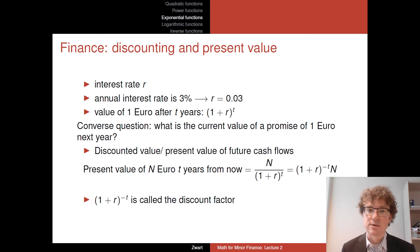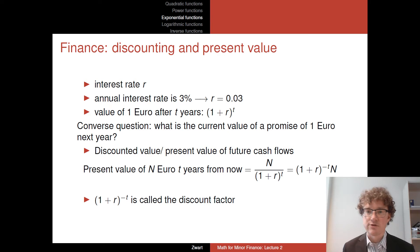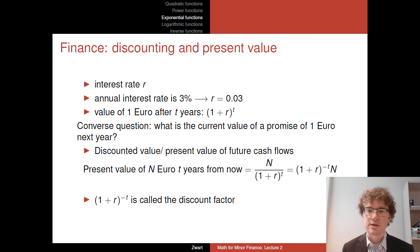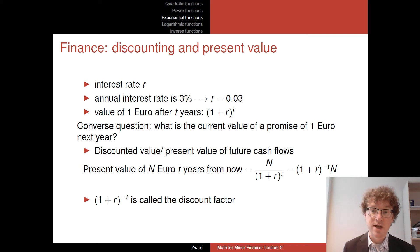If I promise you one euro not now but next year, how much is that promise worth to you now? The answer is the discounted value, or present value, of a future cash flow. If the future cash flow is one euro one year from now, the present value tells us what that's worth today. To get N euros t years from now, you need to put N divided by (1 + r)^t in the bank today.